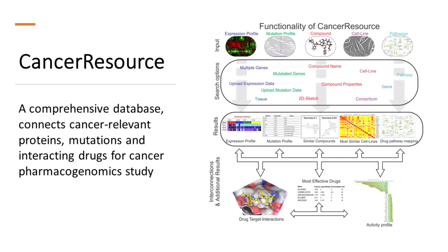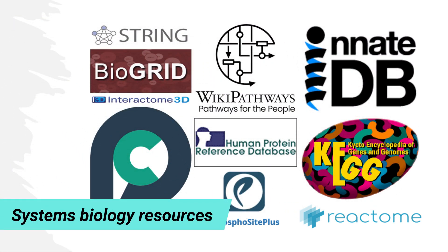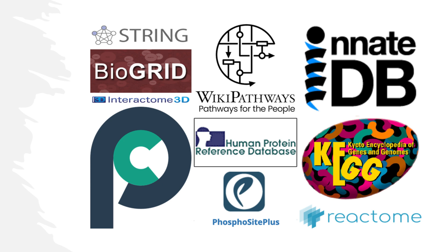In addition, several integrated bioinformatics resources such as Cancer Resource — a comprehensive database that connects cancer-relevant proteins, mutations, and interacting drugs — support cancer pharmacogenomics study. Cancer Resource curated approximately 91,000 drug-protein interactions and drug response data for about 50,000 drugs in over 2,000 cancer cell lines, providing a useful resource for characterizing the relationship between genotype and drug response.